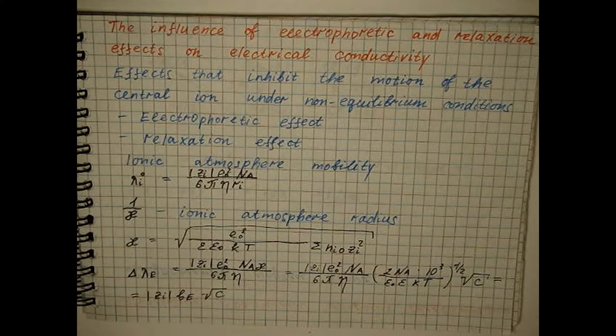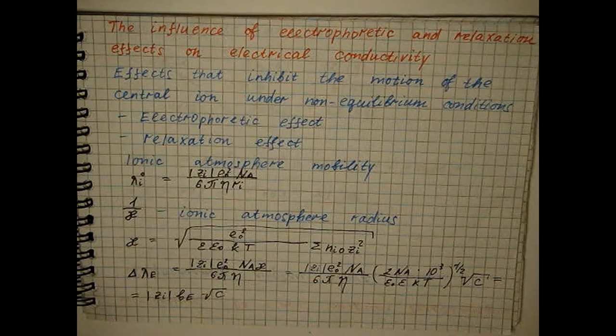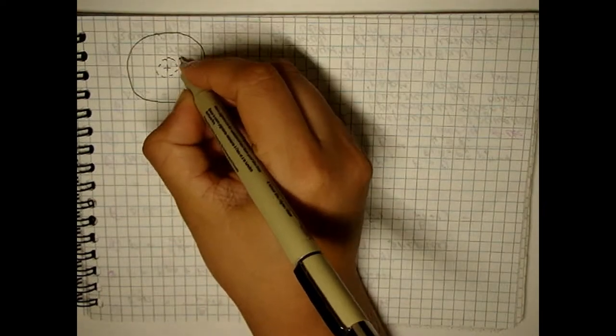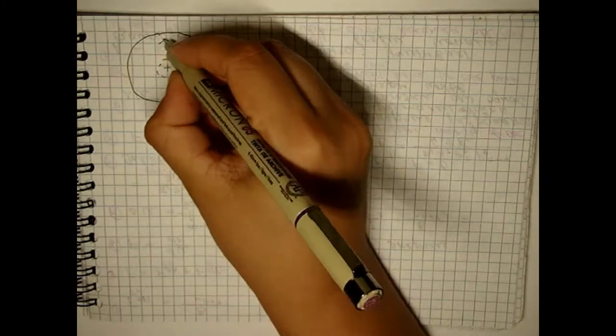Relaxation inhibition effect is due to the finite time of the destruction of the ionic atmosphere. As a result, the center of the ionic atmosphere under non-equilibrium conditions is displaced by a certain distance from the position of the moving central ion.